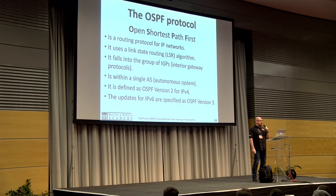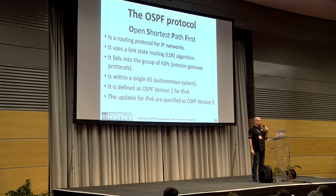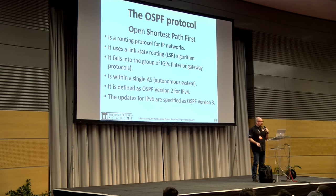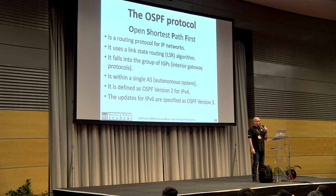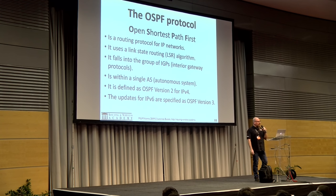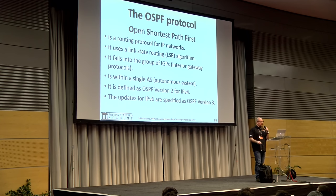OSPF uses a link-state routing algorithm. It falls into the group of IGPs — Interior Gateway Protocols — used within a single autonomous system (AS). It is defined by OSPF version 2 for IPv4 and version 3 for IPv6. RouterOS implements both version 2 and version 3, and it works very well.